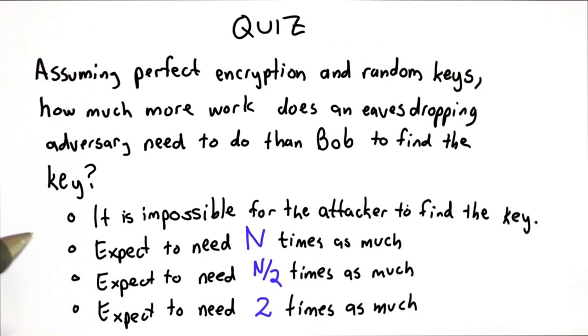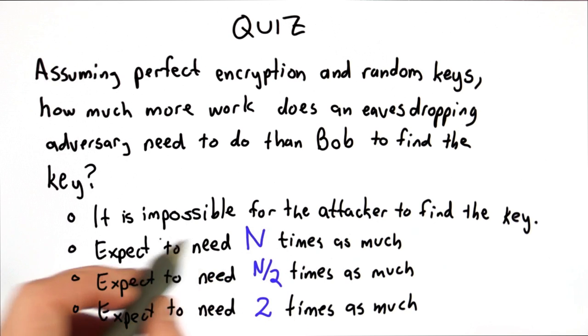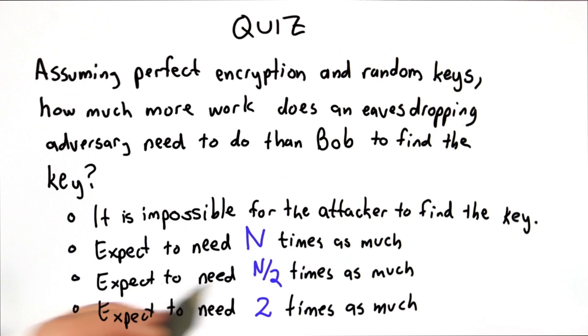It's impossible for the attacker to find the key. The attacker would need to use N times as much work as Bob to determine the key. The attacker would expect to need N over 2 times as much work as Bob, or the attacker would be expected to need twice as much work as Bob. The value of N is the number of puzzles that Alice creates and sends to Bob.